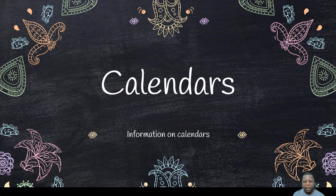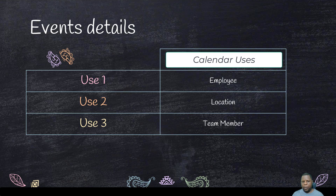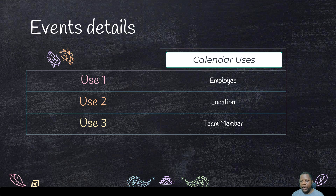What are these calendars and what can they represent? Calendars can represent an employee — it can be the CEO, the receptionist, anyone who wants bookings made with them. So a calendar can represent the schedule of an employee. The second use of a calendar is if a company has different locations — these can be separate calendars, so area one is calendar one.